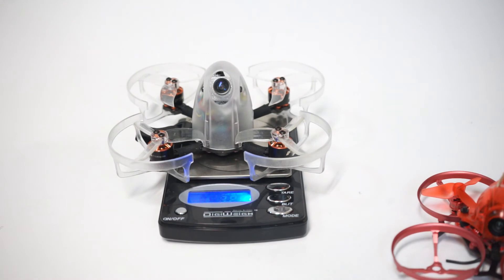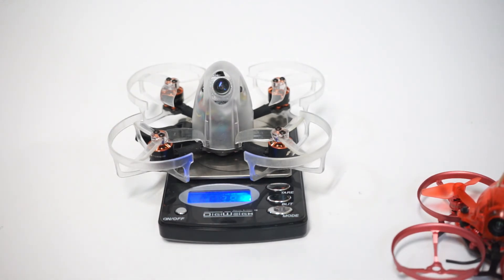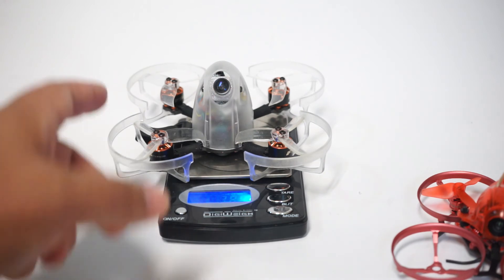It's lighter than most of your two and a half inch. Now if you were to take the prop guards off you'd probably lose another five grams or so. So 80 grams with the prop guards and a strap.